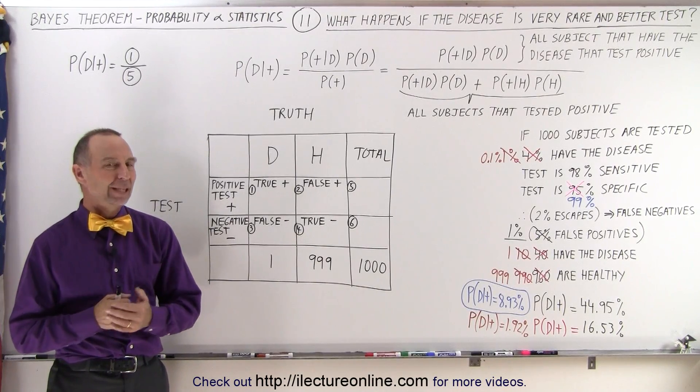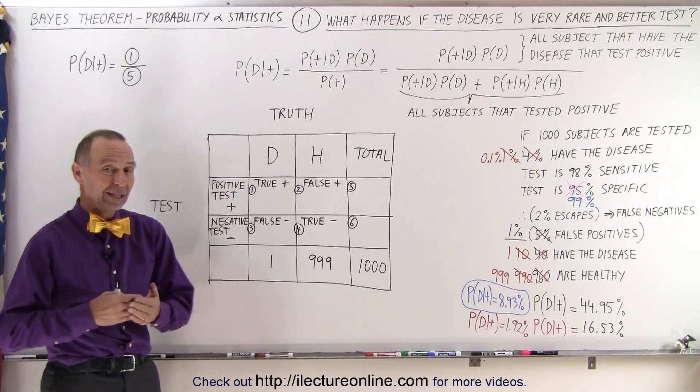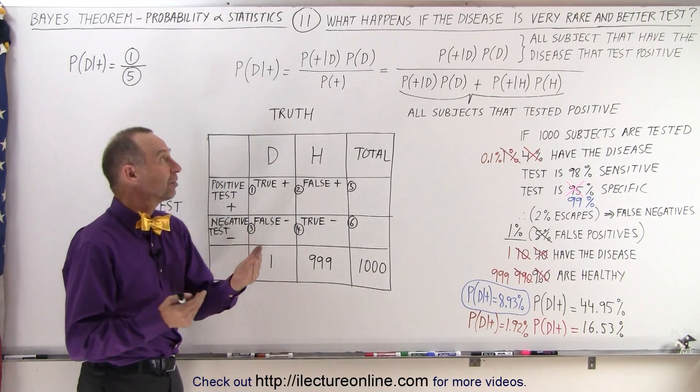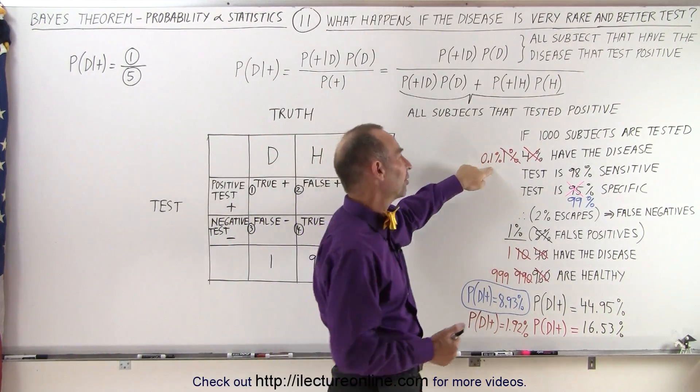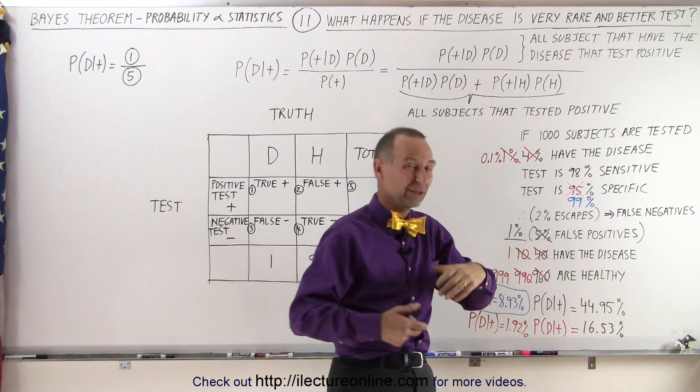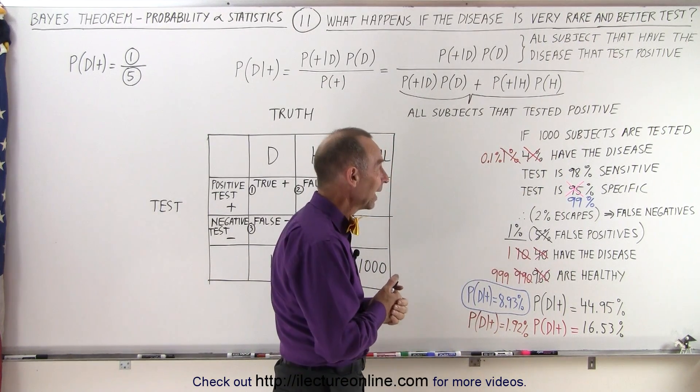Welcome to ElectroOnline. In the previous video we saw that if we're dealing with a very rare condition in such a way that only 0.1% of the population that you're testing for has the disease or the condition you're checking for